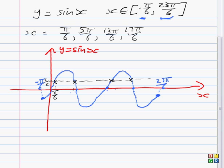So our solutions are π/6, 5π/6, 13π/6, and 17π/6.